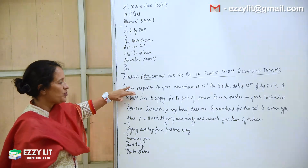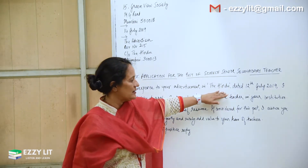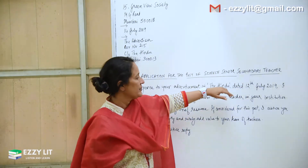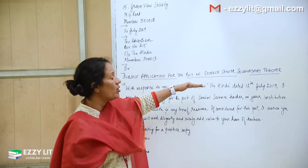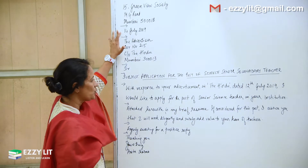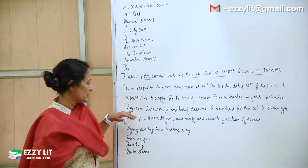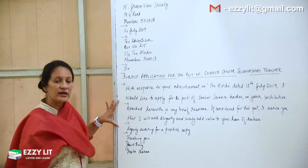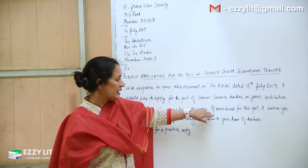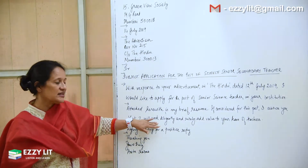Leave a line. 'With response to your advertisement in The Hindu dated 12th July 2019.' Remember — the date of your letter and the date of the advertisement should be different. The advertisement date will always be before the date you start writing your letter. So the advertisement is dated the 12th and the letter is dated the 14th. 'I would like to apply for the post of Senior Secondary Science Teacher in your institution.'